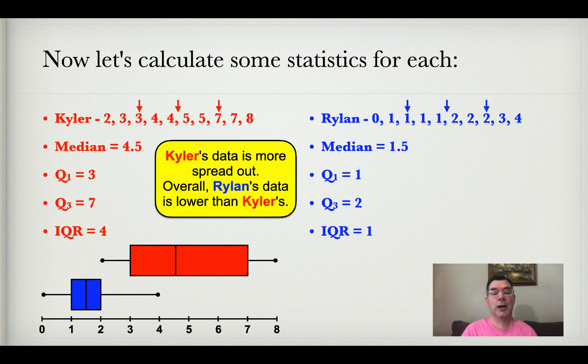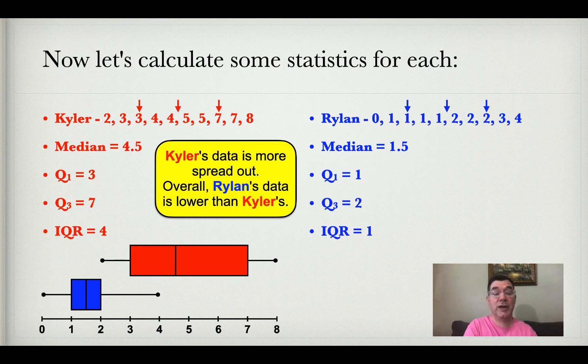So that's how you would draw more than one box and whisker plot on the same axis for the purpose of comparing and contrasting the data. If you have any questions about that, please let me know, and I will see you tomorrow.